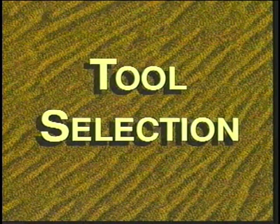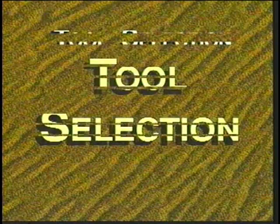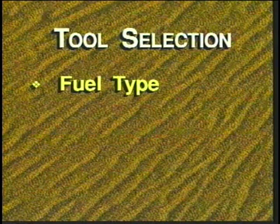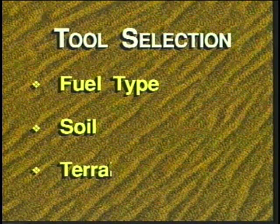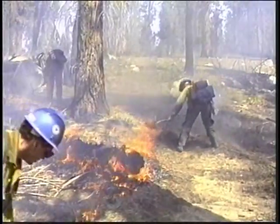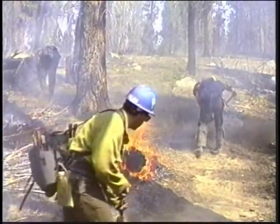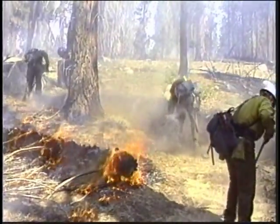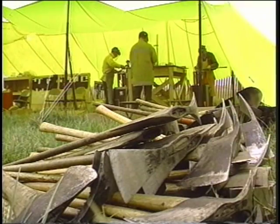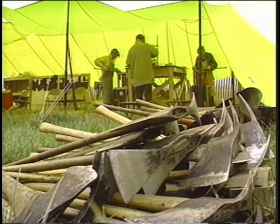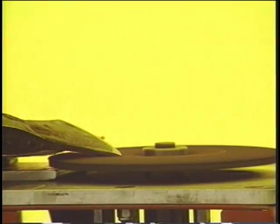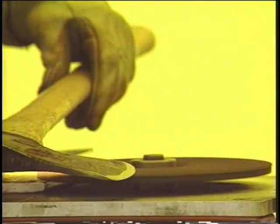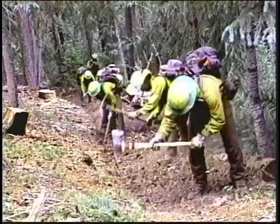This portion of the video will deal primarily with hand line construction. Proper tool selection is a critical element of hand line construction. Tool selection will depend on fuel type, soil, and terrain features. To be effective, the crew boss must consider fuel types, the variety of hand tools, and the advantages of each tool in a particular fuel type. Safety is a primary consideration and requires that the crew boss obtain properly maintained tools and ensure that they are correctly used.